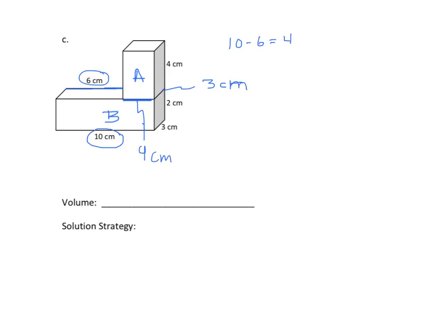Now that we've done that, we look at B and we can see that we have all our dimensions — length, width, and height. We need to do some calculating and then combine the volume of each of these rectangular prisms. Sometimes we're going to have to figure things out by looking at the relationships with the other rectangular prism.